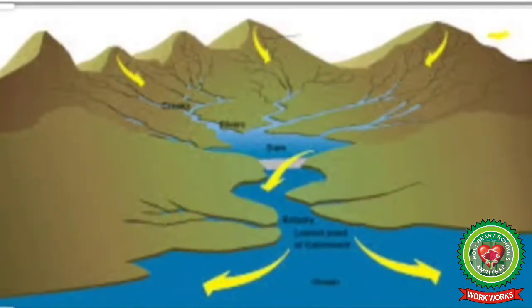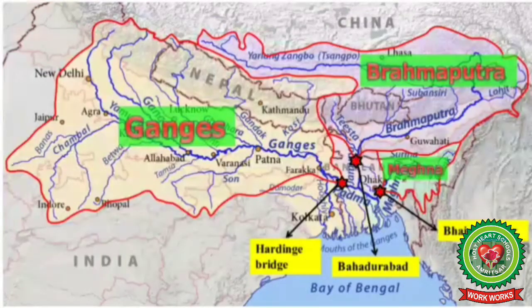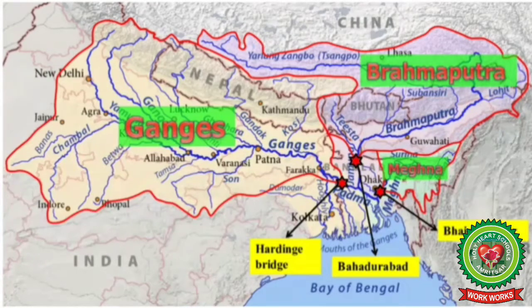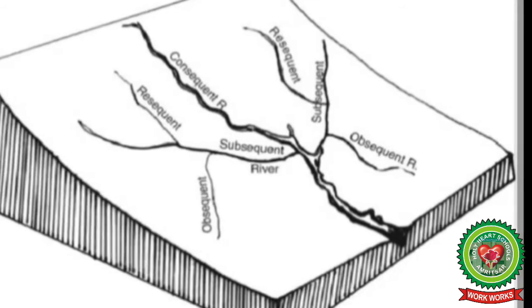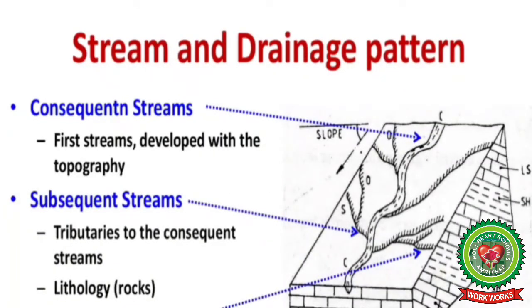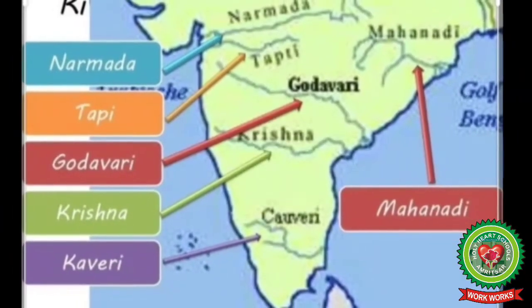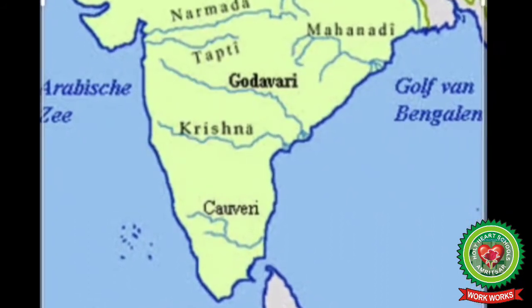Catchment area — an area of land where water collects when it rains, often bounded by hills. The Ganga-Brahmaputra-Meghna system has the biggest catchment area of about 110 million hectares, which is more than 43 percent of the total catchment area of all major rivers in India. Consequent streams are streams whose course is a direct consequence of the original slope of the surface on which they developed. Most rivers of peninsular India are consequent rivers — for example, the Godavari, Krishna, and Kaveri.